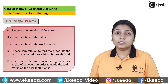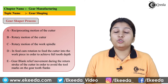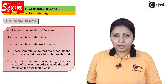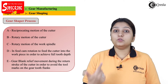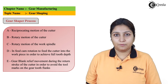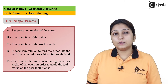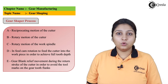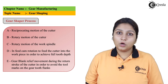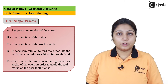You can see there is a C notation which gives rotary motion to your workpiece. So as your cutter rotates, your workpiece also rotates, while your cutter is also reciprocating. Similarly, D and E notations help your cutter as well as the workpiece to move in their respective directions.